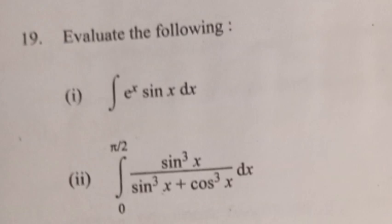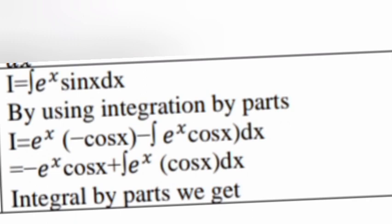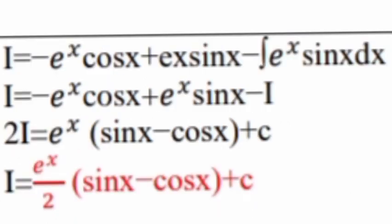Question 19.1: Evaluate ∫eˣ sin x dx. Using integration by parts: I = eˣ(−cos x) − ∫eˣ cos x dx. Applying integration by parts again: I = −eˣ cos x + eˣ sin x − ∫eˣ sin x dx. So 2I = eˣ(sin x − cos x). Therefore I = (eˣ/2)(sin x − cos x) + C.